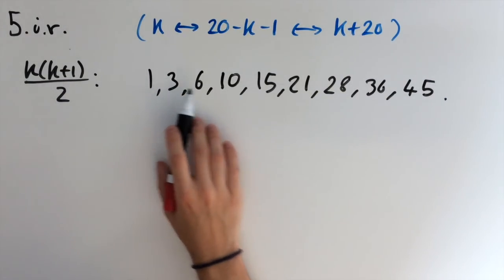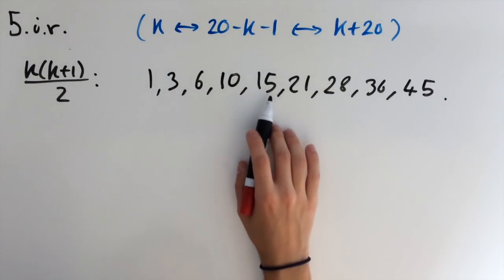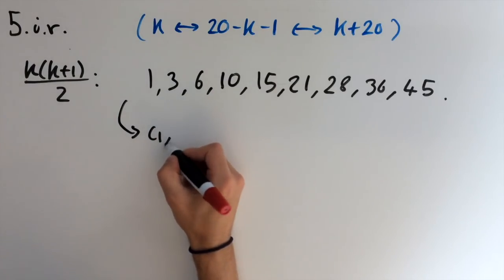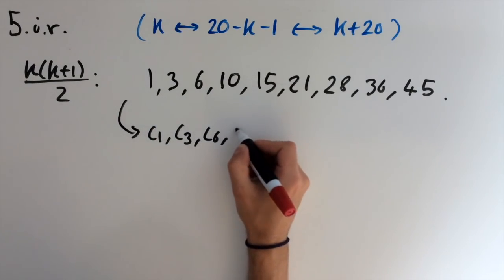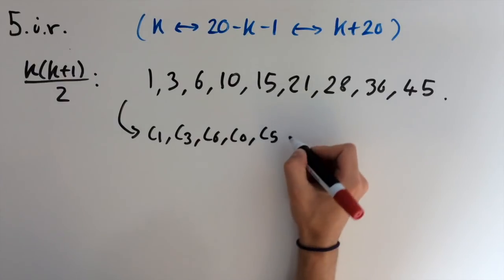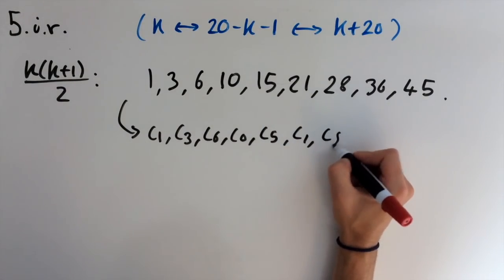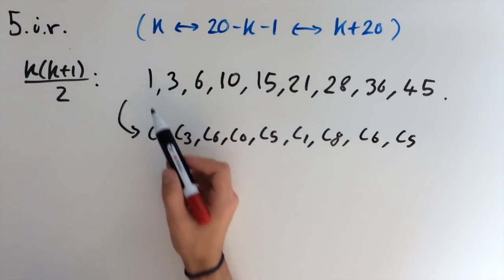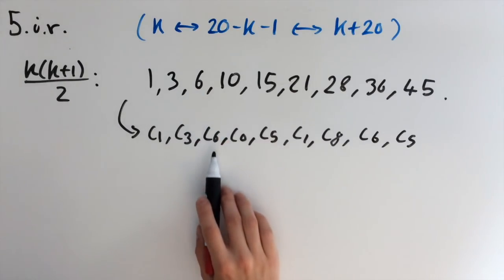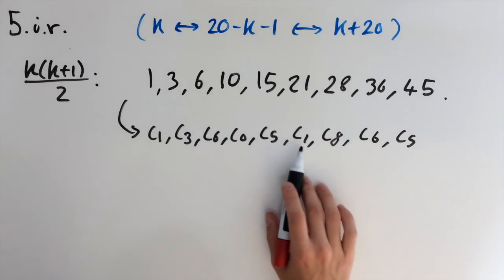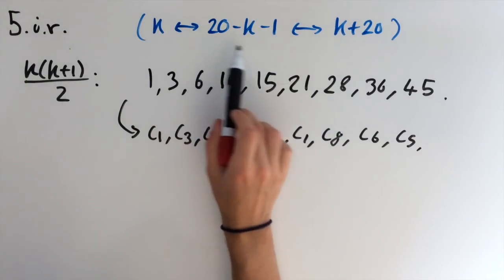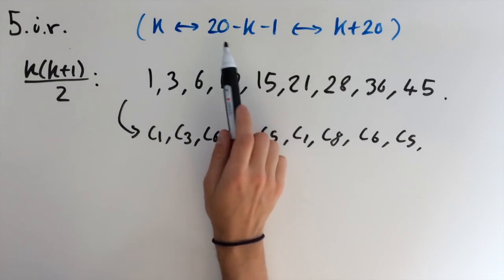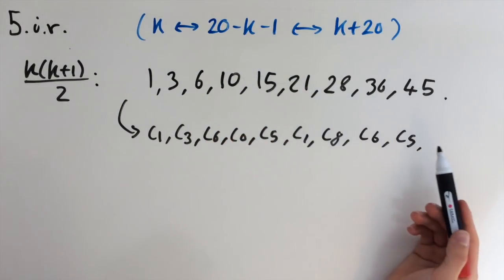So this formula tells if we take the last digit, we can work out which child got which sweet. So if we convert this into the children, we get c1. By just taking the last digit, I'm going to write c3, c6, c0, c5, c1, c8, c6, c5. So the first sweet got given to child 1, second to child 3, third to child 6, etc. like this. And I've written out the first nine children here. Because we can use this formula up here from earlier in the question. We worked out that the kth sweet is given to the same child as the 20 minus k minus 1th sweet, which means we've got a symmetry.